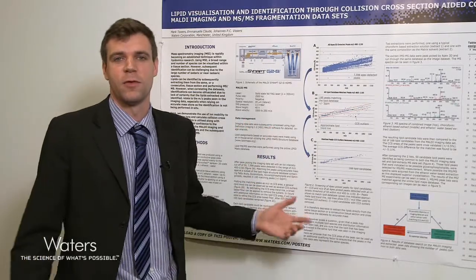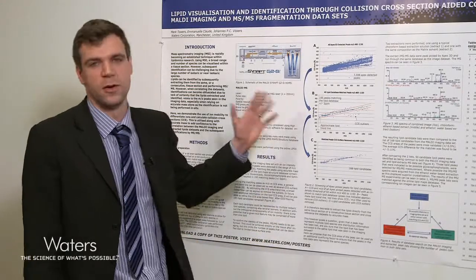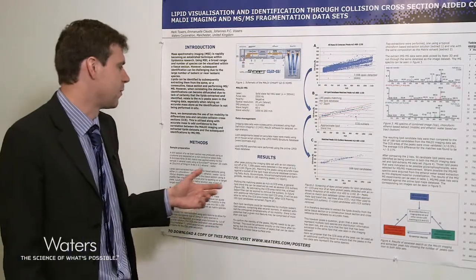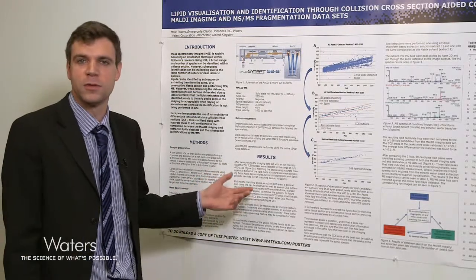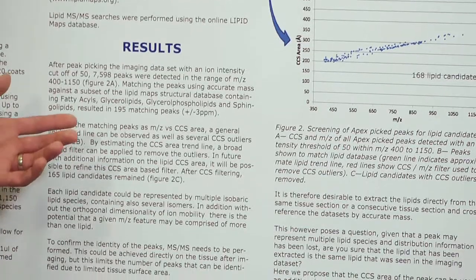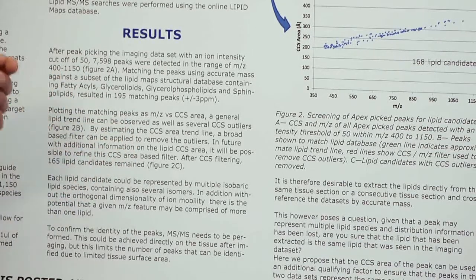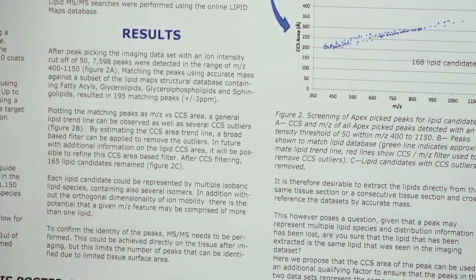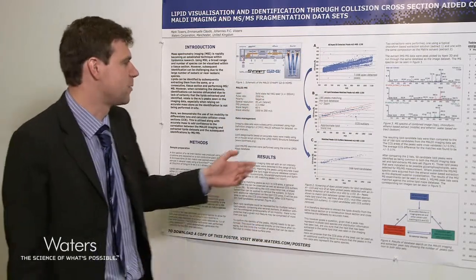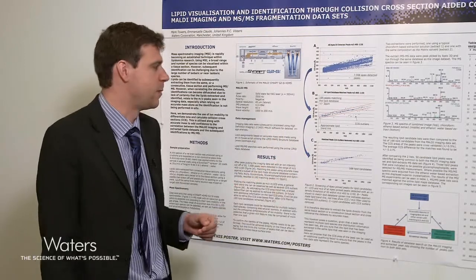Within the mass range of 400 to 1150 in the lipid range, we were able to identify 7,598 potential ions. Not all of these are lipids, so we generated a database using information from the lipidmaps.org website. This database contained fatty acyls, glycerolipids, glycerophospholipids, and sphingolipids. When we matched this database against our 7,598 peaks, we were able to identify 195 peaks which matched our database plus or minus 3 ppm.